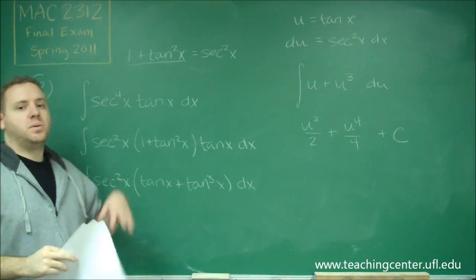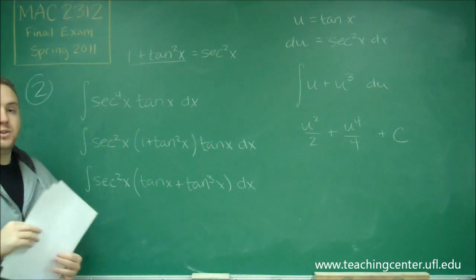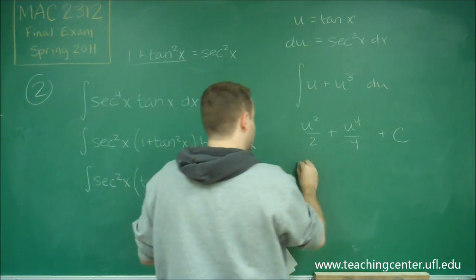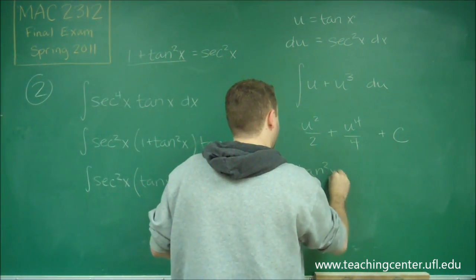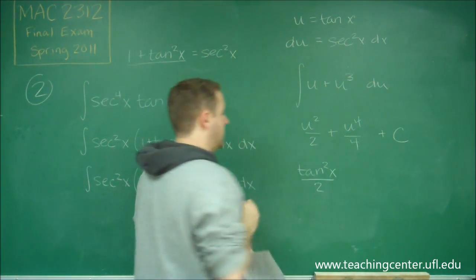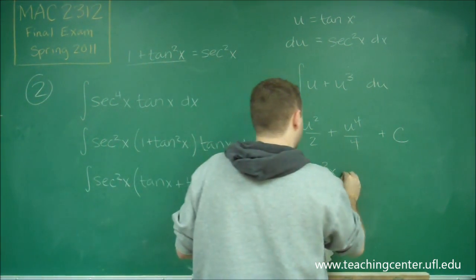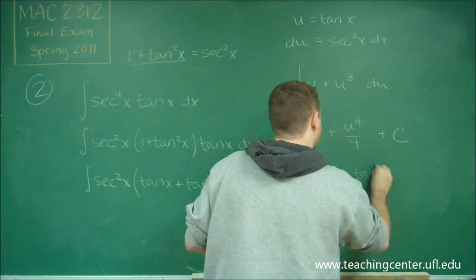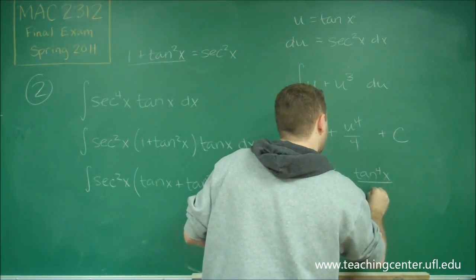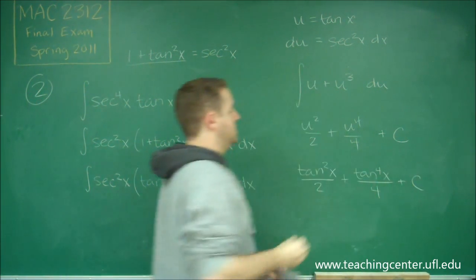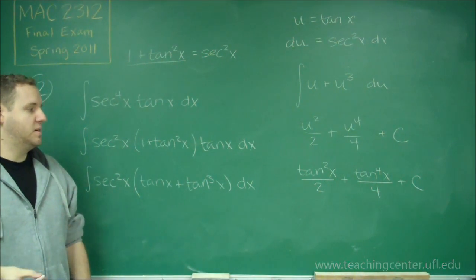And finally we plug back in what we had substituted for u, and u is tangent x. So we get tangent squared x divided by 2 plus tangent to the 4th x divided by 4 plus c. And that's our final answer here for this integral.